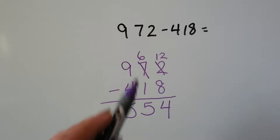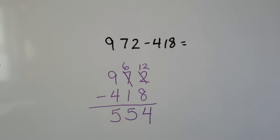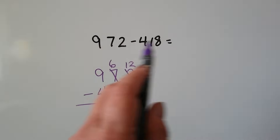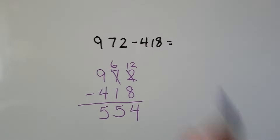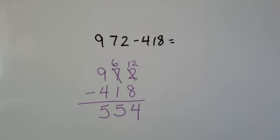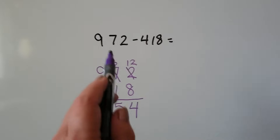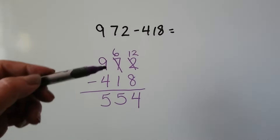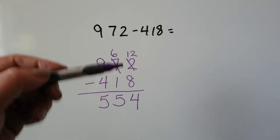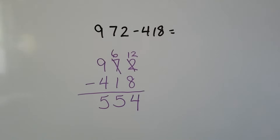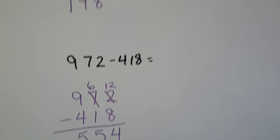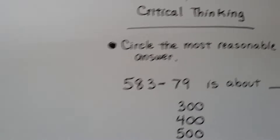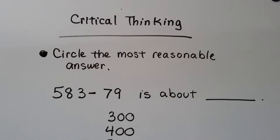It's a lot easier to subtract and regroup when the numbers are stacked. If you're using a calculator you can enter them horizontally, but if you need to do the math and regroup it's better to stack them. Now let's look at a critical thinking problem: circle the most reasonable answer — 583 minus 79 is about 300, 400, 500, or 600.